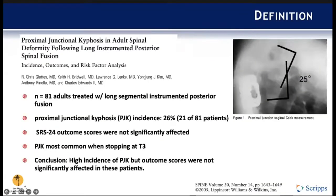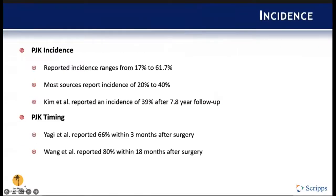In the Glatz paper, they looked at 81 adult patients treated with long segmental instrumented posterior fusion. They saw an incidence of about 26% in their study. They also looked at SRS-24 outcomes, which were not significantly different in patients with PJK versus those without. PJK was most common when stopping at the T3 level. So there's a high incidence of PJK, but outcome scores weren't necessarily significant in these patients.